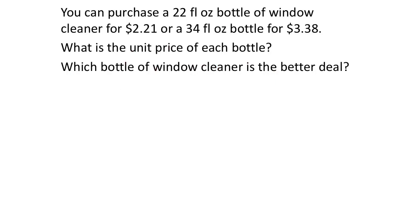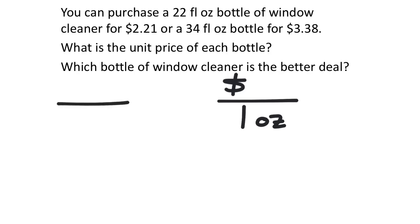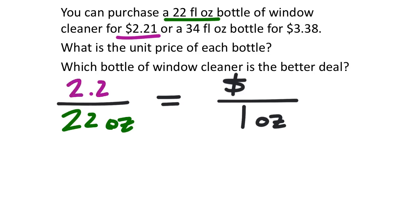You can purchase a 22 fluid ounce bottle of window cleaner for $2.21 or a 34 fluid ounce bottle for $3.38. What is the unit price of each, and which is the better deal? Unit price means dollars per one ounce. For the first bottle: $2.21 over 22 fluid ounces. Dividing 2.21 by 22 gives several decimal places — I'll keep it unrounded to avoid the numbers appearing the same.